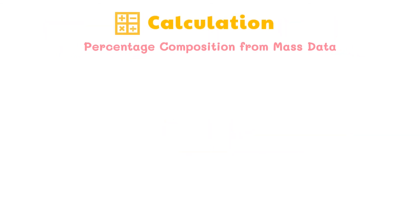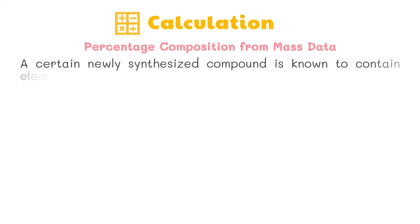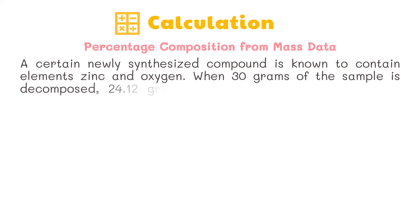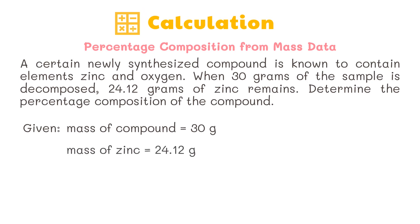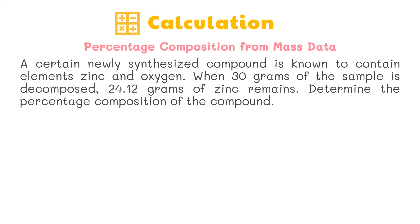Let's try another problem. A certain newly synthesized compound is known to contain elements zinc and oxygen. When 30 grams of the sample is decomposed, 24.12 grams of zinc remains. Determine the percentage composition of the compound. First, list the known and unknown quantities. The given quantities are: mass of compound, which is 30 grams, and mass of zinc, which is 24.12 grams. We are going to find the percentage of zinc and the percentage of oxygen.